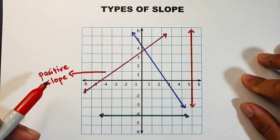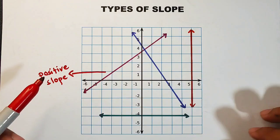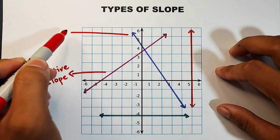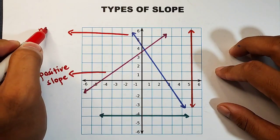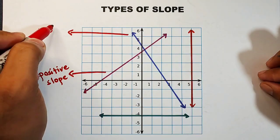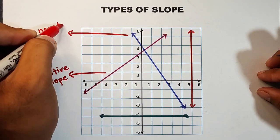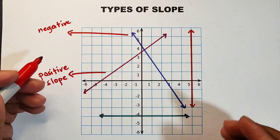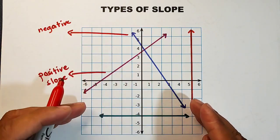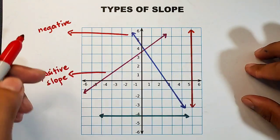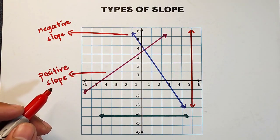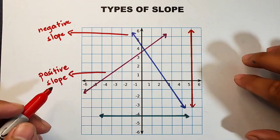If we have a positive slope, definitely we also have a negative slope. A line with a negative slope — its slant rises from right to left. Notice the blue line: it is low on the right and rises going to the left. So it rises from right to left. Automatically, when you see that kind of slope, the value you calculate will be a negative slope.